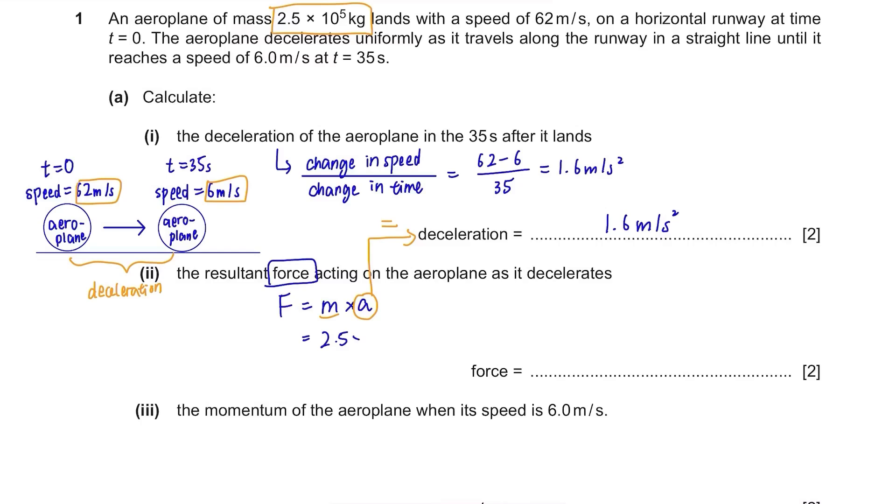2.5 times 10 to the power of 5 times 1.6 equals 4.0 times 10 to the power of 5 and the unit is newtons as it is a force.